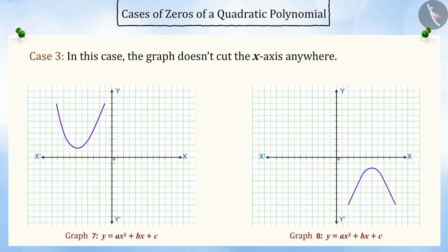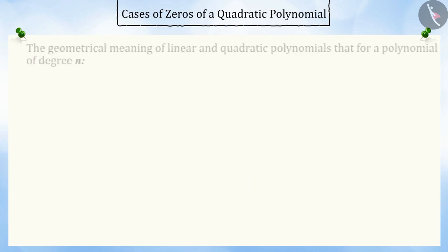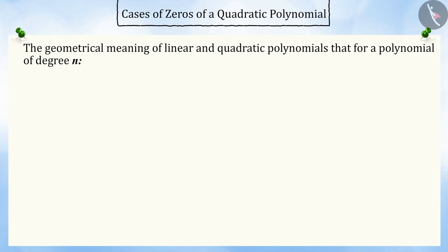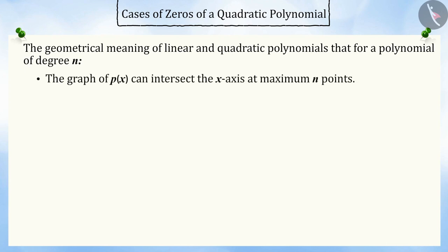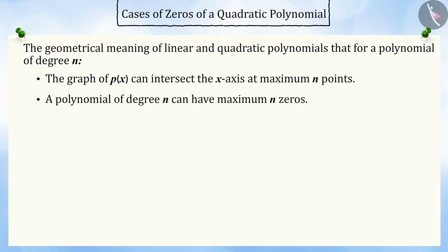Case 3: the graph does not cut the x-axis anywhere. In this case, the quadratic polynomial ax² + bx + c will have no zeros. It is clear from the geometrical meaning of linear and quadratic polynomials that for a polynomial of degree n, the graph of p(x) can intersect the x-axis at maximum n points. Hence, a polynomial of degree n can have at most n zeros.